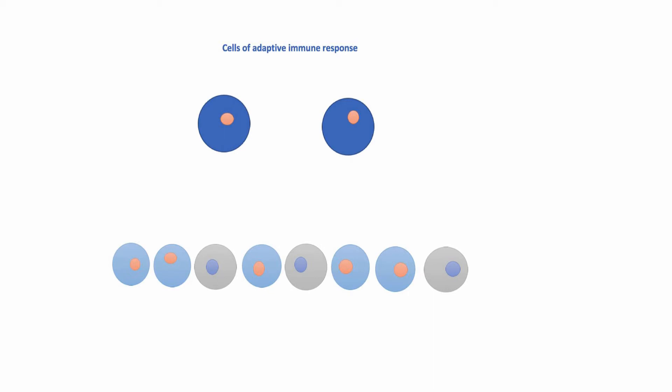As cells of the immune system cannot enter into cells of the body to know the presence of non-self-peptides, they somehow need to recognize the presence of unfamiliar peptides. This is achieved by the presence of MHC or HLA molecules on cell surfaces. These molecules take peptides from the interior of the cell and present them on the cell surface that is then assessed by cells of immune response.